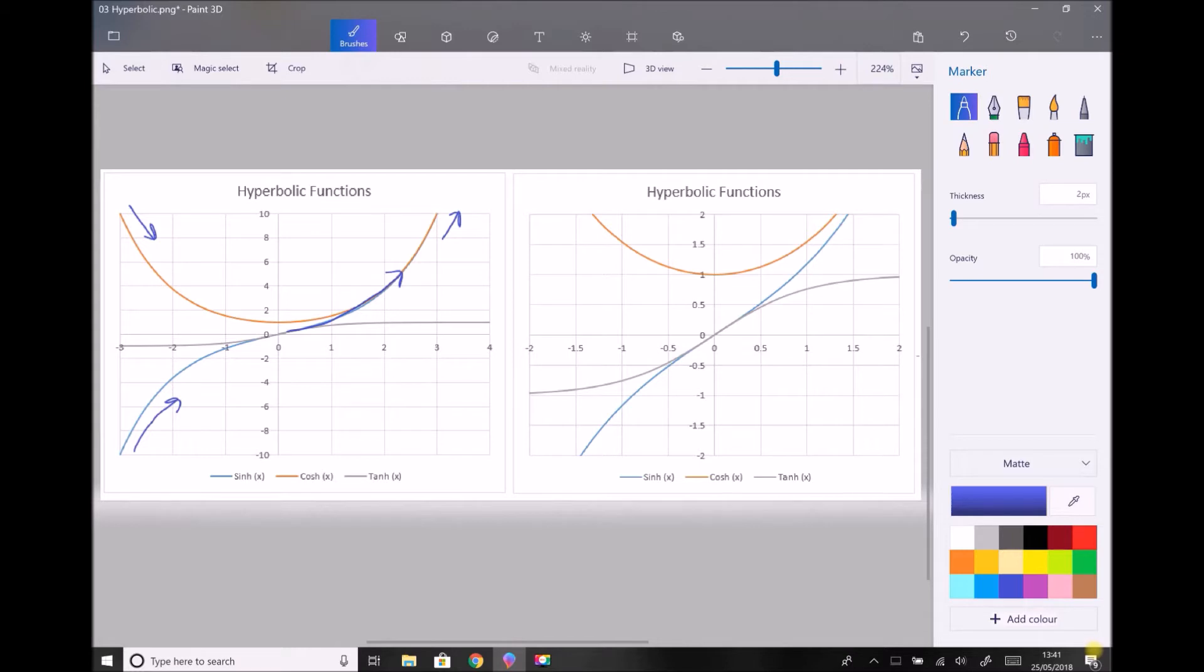And thirdly, we have the hyperbolic tan, which is the third graph on here. And we can see that that has two horizontal asymptotes. This one here is at minus one, or y equals minus one, and this one here is at y equals one.